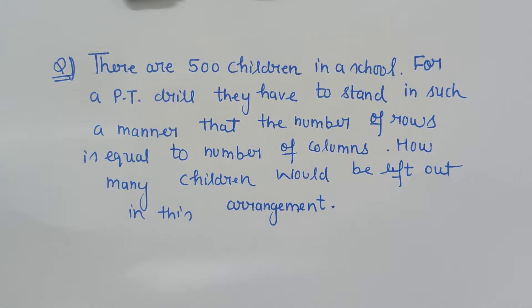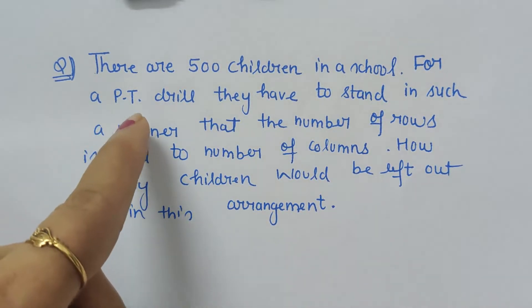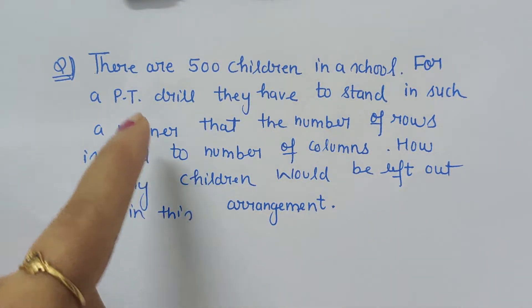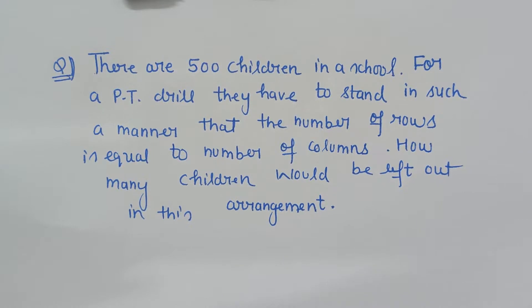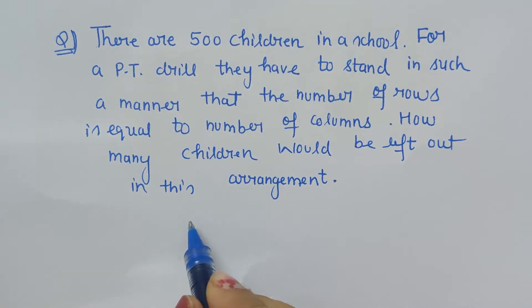Generally, it is not right to leave any children who are interested to participate, but for this question we have to solve it that way. We have to leave a few children, so those who will be perfect will be filtered out. There are 500 children in school, so obviously we have to find the square root to determine how many children will be left out.